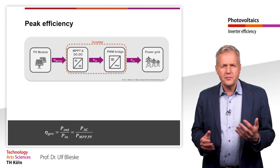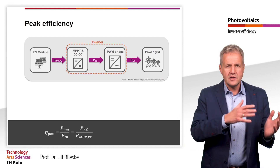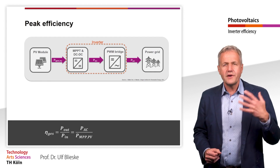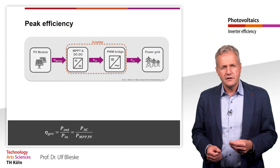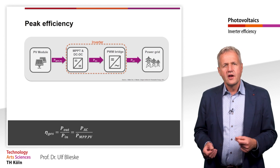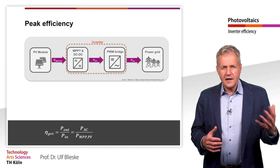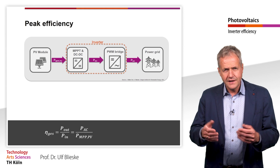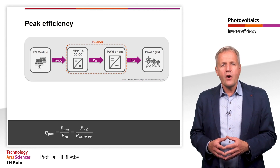The efficiency is the ratio of the power at the inverter output to the power at the input. The input power here is the instantaneous theoretical MPP power of the PV generator. As we have seen, the inverter performs two main functions: finding the optimal operating point — that is the MPP tracking — and the conversion of direct current into alternating current. Both functions are each described by their own efficiency.